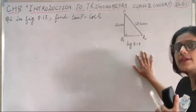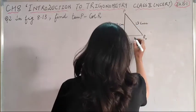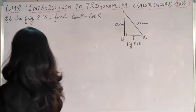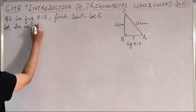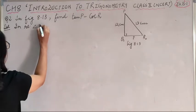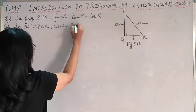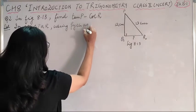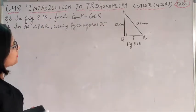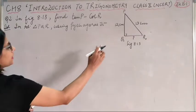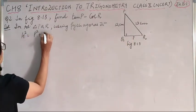First, what we have to do is find the third side. We will find the third side by Pythagoras theorem. Here we don't have base, so first we will do that. In right triangle PQR, angle Q is 90 degrees. Using Pythagoras theorem, hypotenuse square is equal to perpendicular square plus base square.